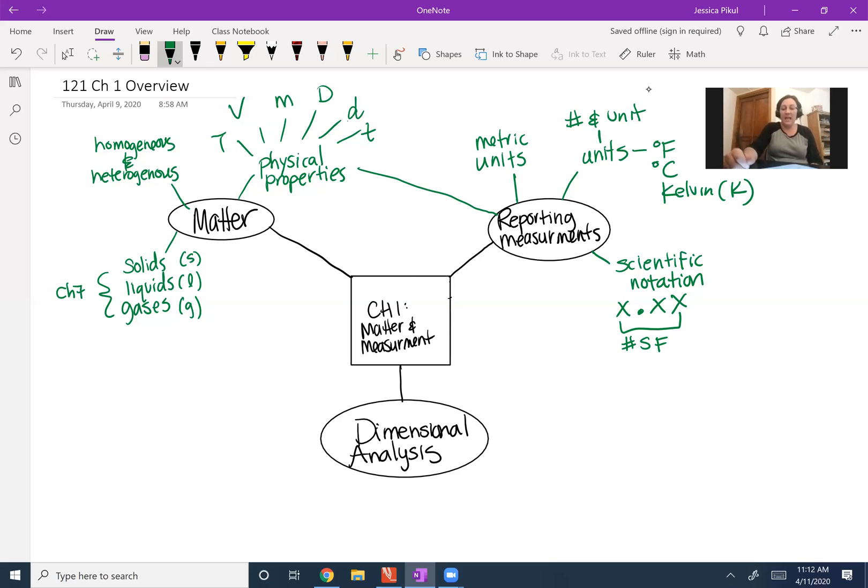Then it's multiplied by 10 to an exponent. If this exponent is negative, it's a very small number. And if it's positive, it's a very large number. So an example would be 6,000. Well, let's say 6,000.0, or 6.1234. I've got four significant figures times 10 to the third. It's a positive number showing it's a positive exponent showing it's a large number.